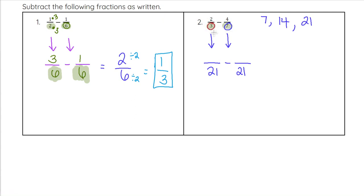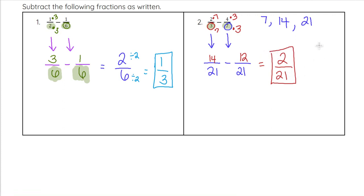To get 21 from 3, we multiply by 7, so the numerator 2 also multiplies by 7: 2 times 7 is 14, giving us 14 over 21. To get 21 from 7, we multiply by 3, so the numerator 4 also multiplies by 3: 4 times 3 is 12, giving us 12 over 21. Now we subtract: 14 minus 12 is 2, and the denominator stays 21. So two over 21 is our answer. The only common factor is 1, so two over 21 is the final answer.